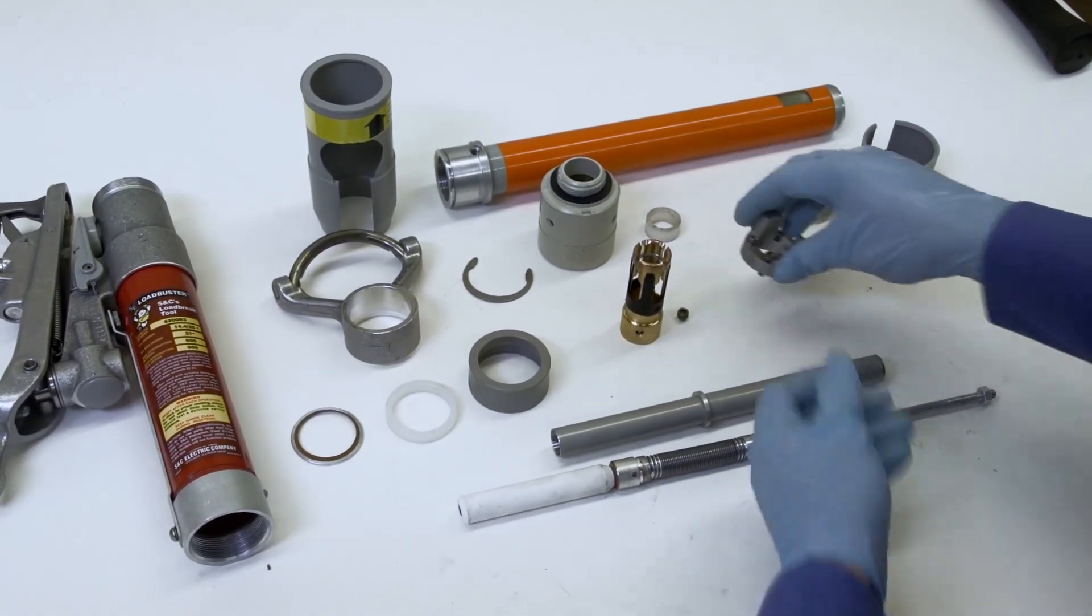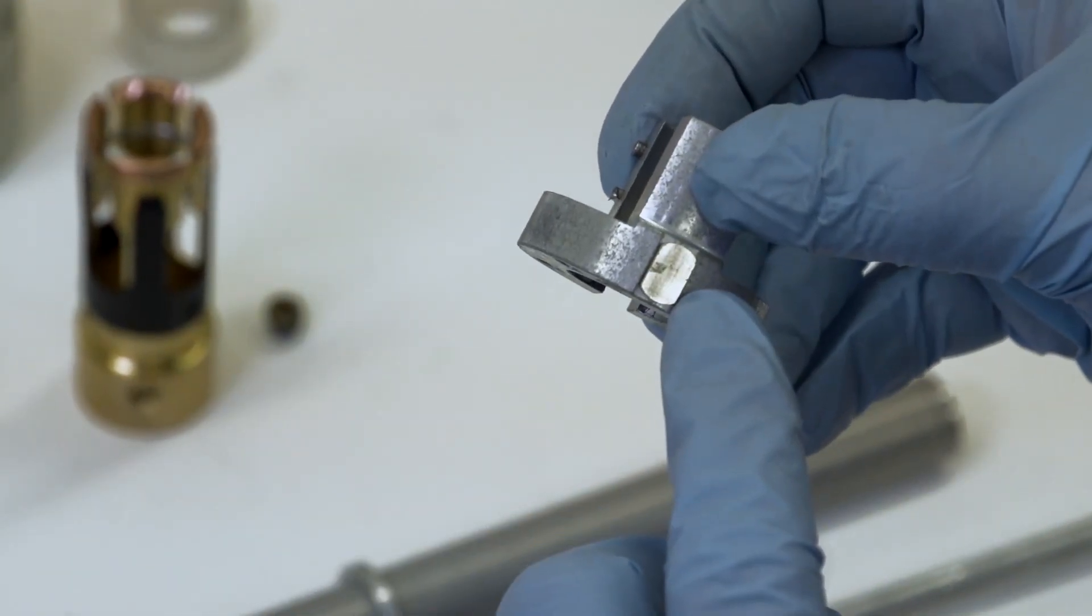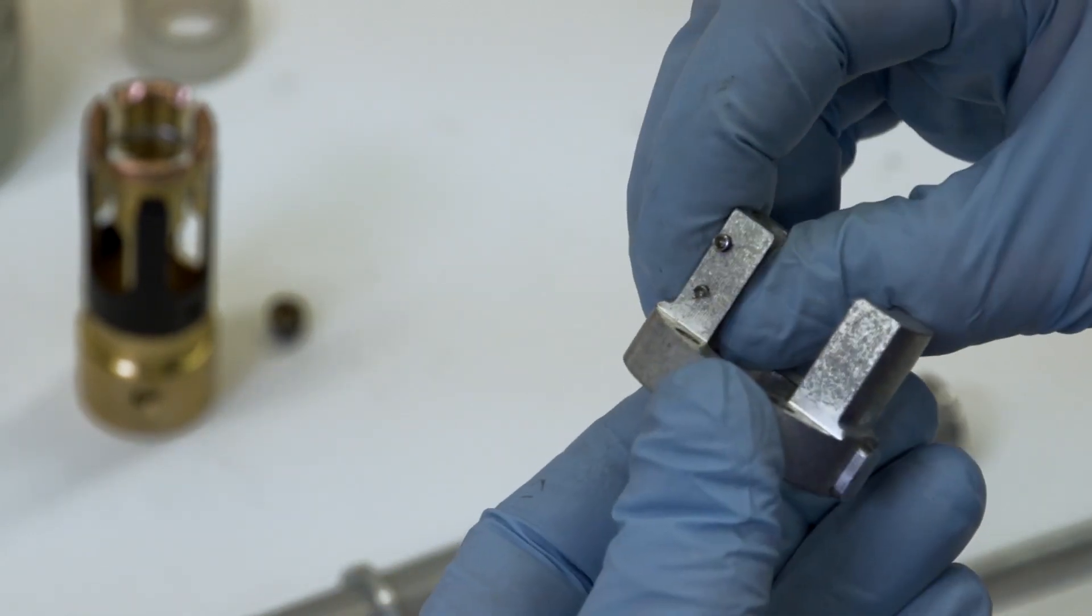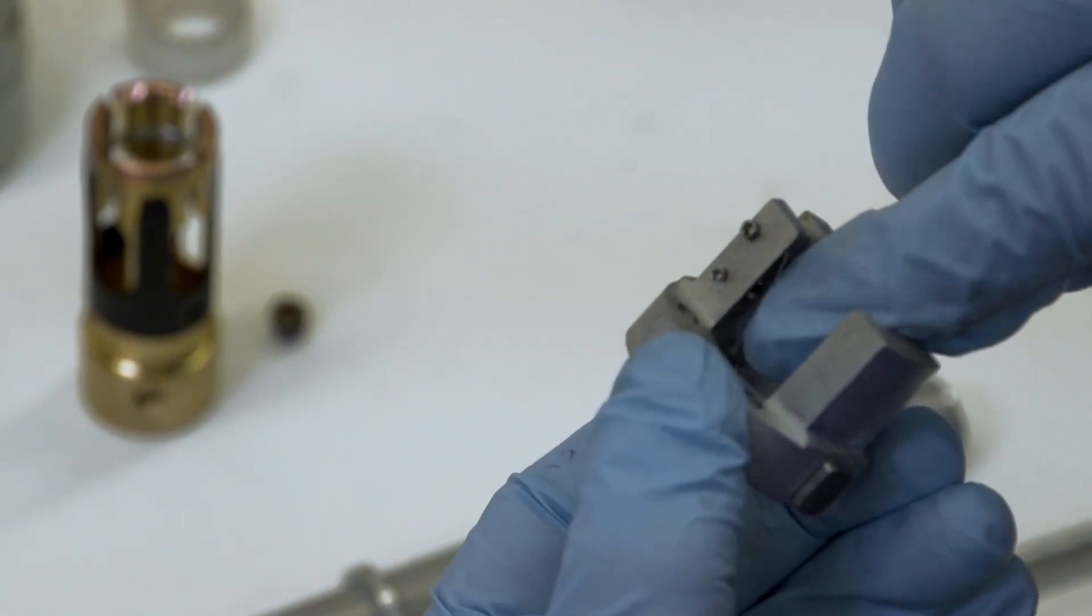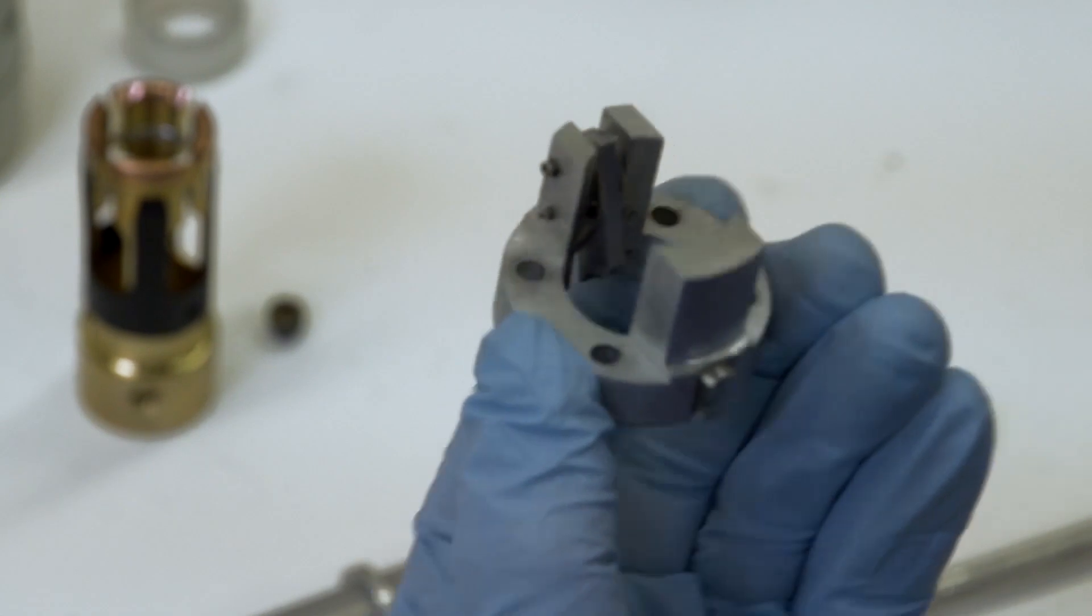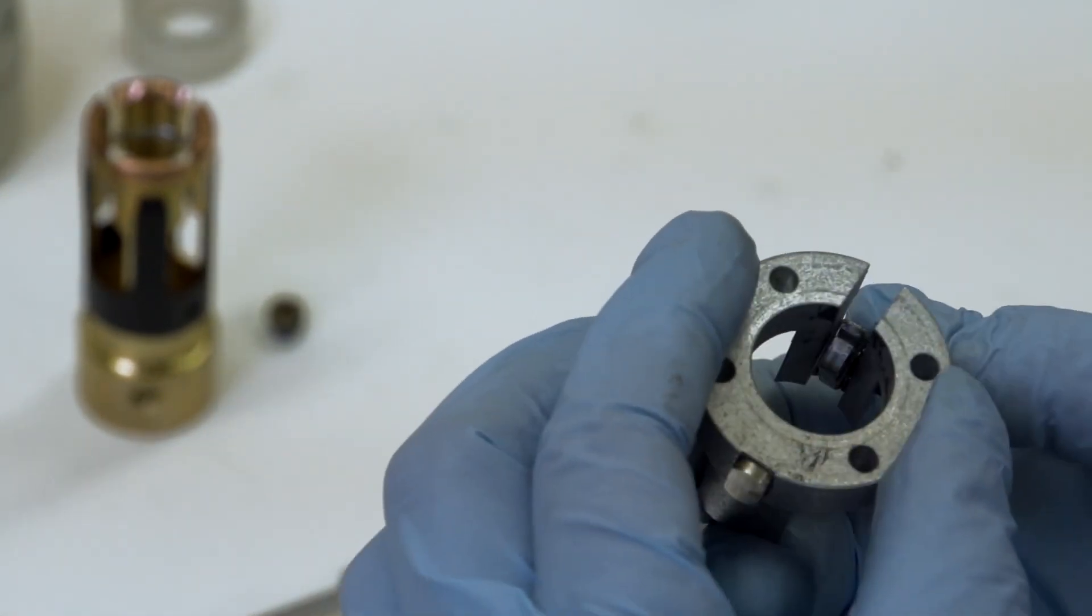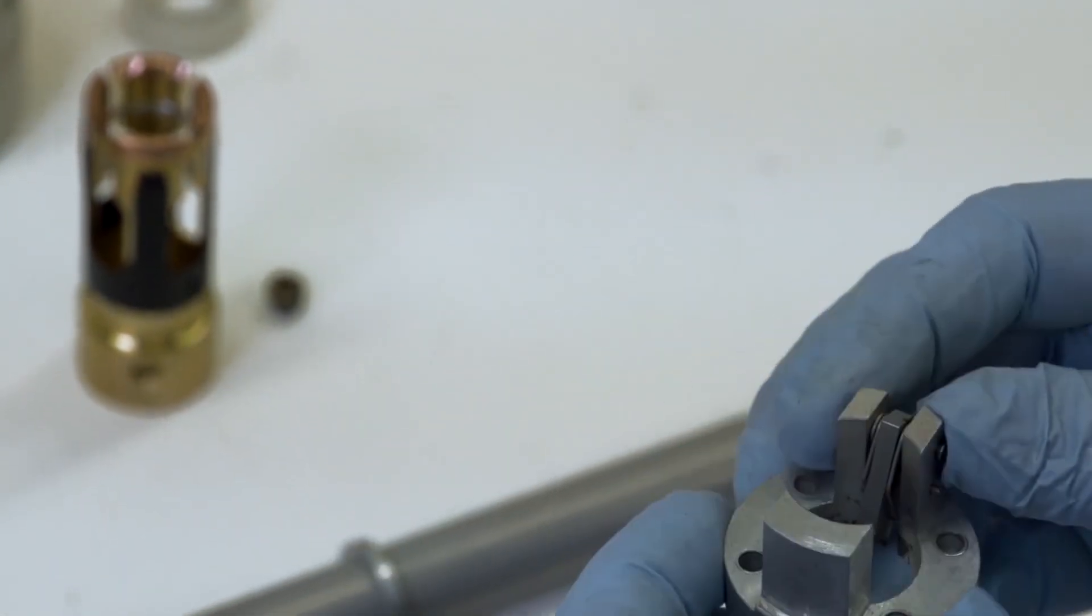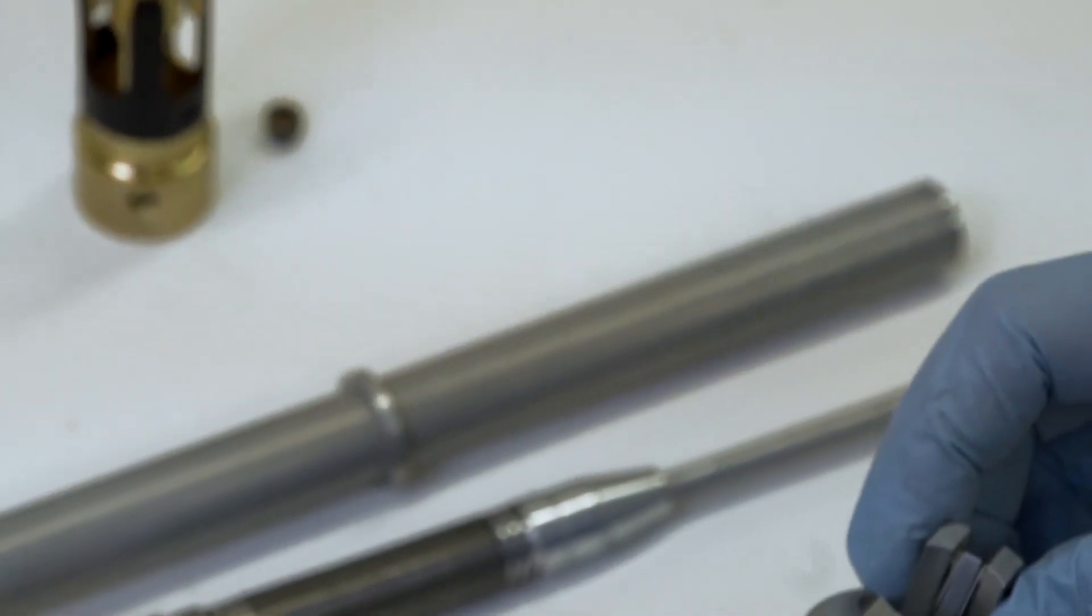Examine the trigger to make sure the spring is working and that the key is still securely in place. Look for evidence of excessive wear, broken springs, burning, or pitting of any part of the assembly. If wear is found, the entire trigger assembly should be replaced.